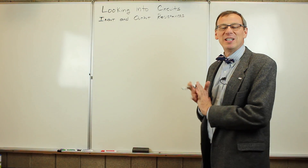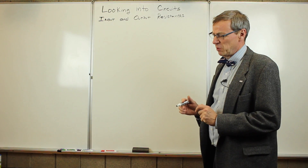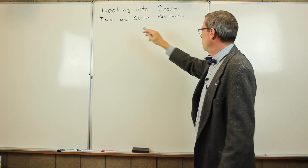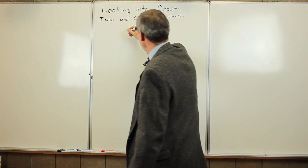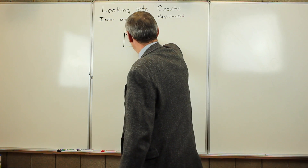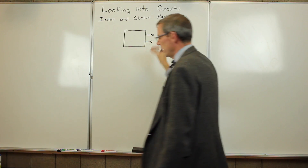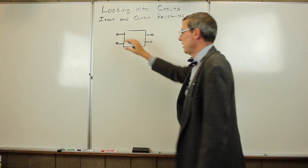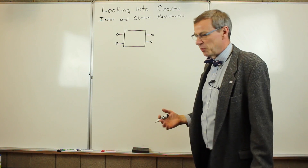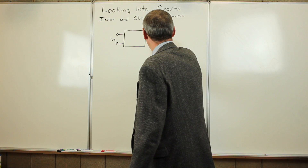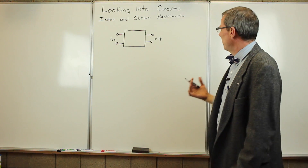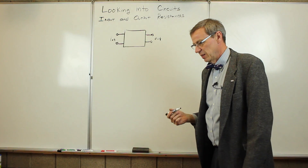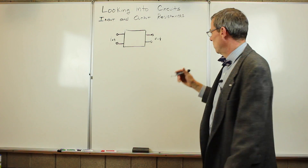In this lecture, we're going to talk about something we call looking into circuits. By looking into circuits, we're asking: when we look into a pair of leads, what is the equivalent of what we're seeing? We can talk about an input or an output — an input resistance and an output resistance. The basic idea is that we have some circuit; it has some output and also some way to hook something up to put a voltage in. We can look into either side: the output side has an output resistance, and the input side has an input resistance.